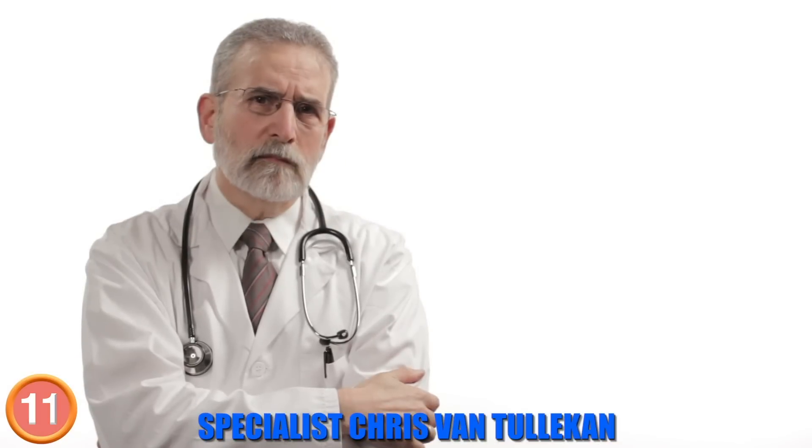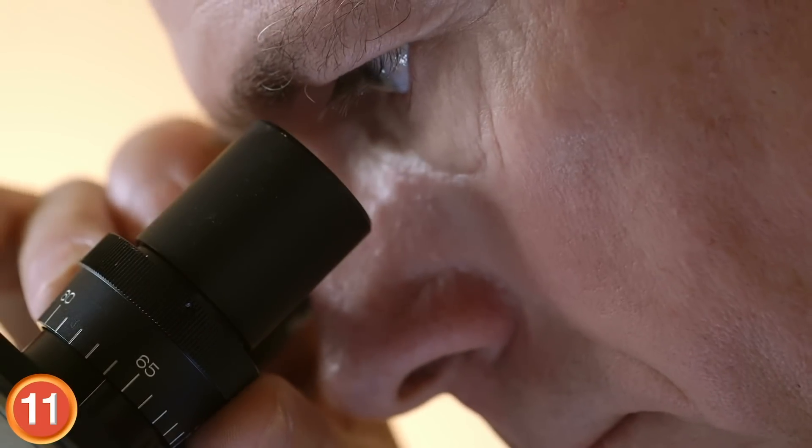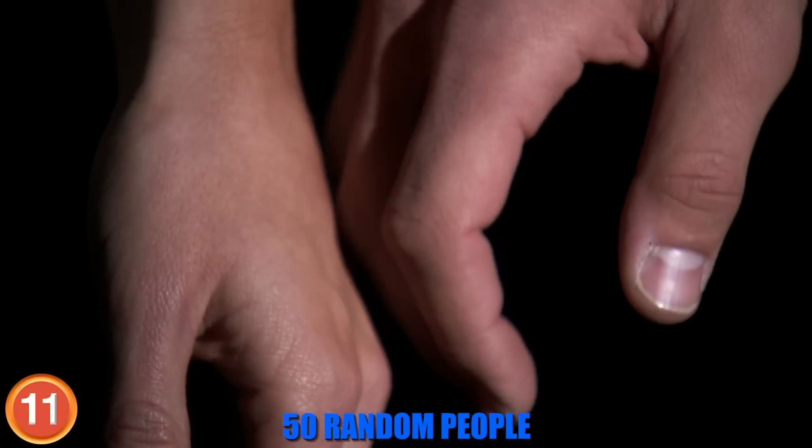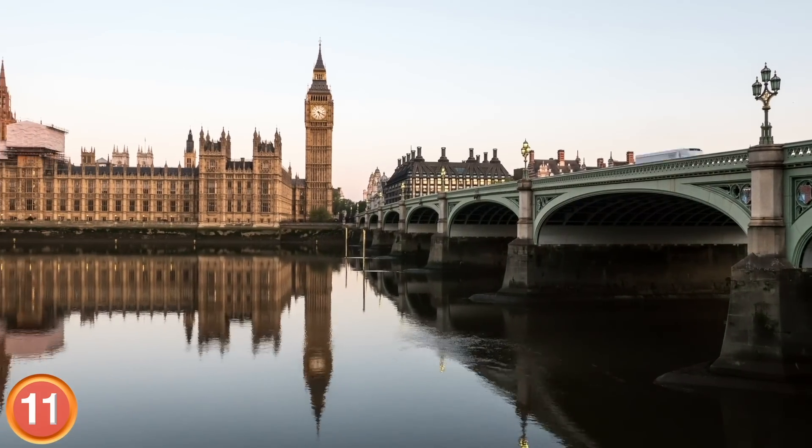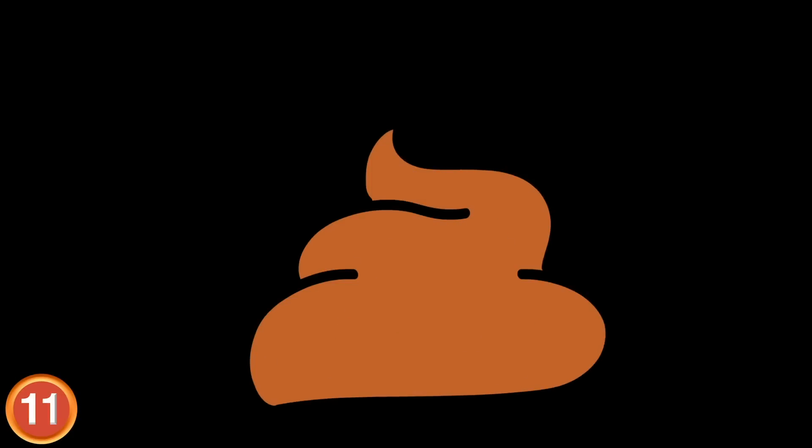Number 11. The first stop on this train ride is Brown Town. Infectious disease specialist Chris Van Tiliken ran a study in 2016 testing the hands of 50 random people across London. What he found was that 30% of people had fecal matter under their fingernails.